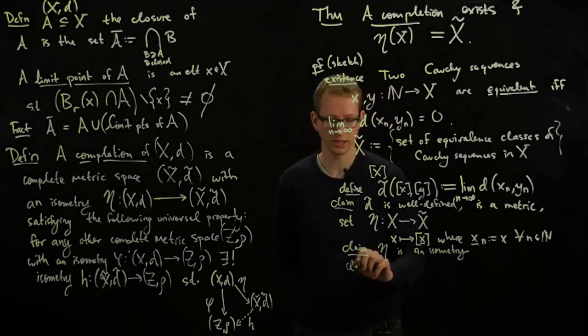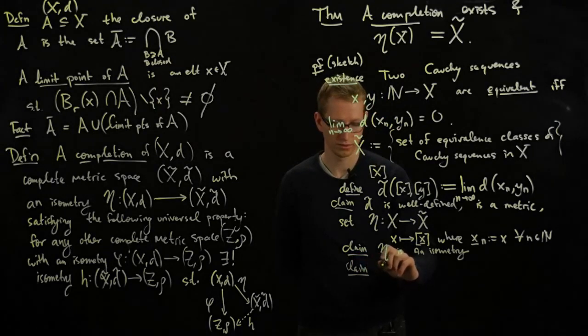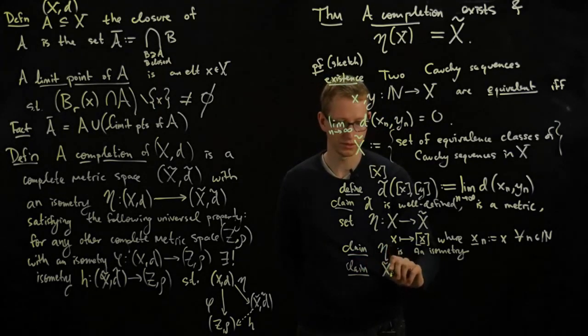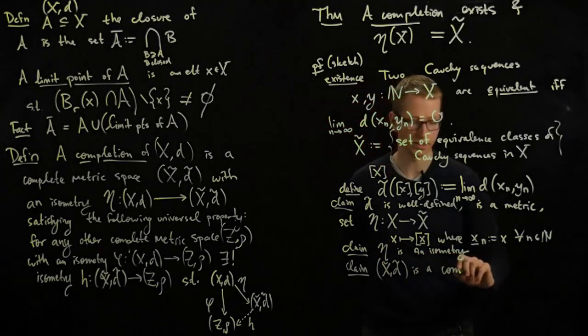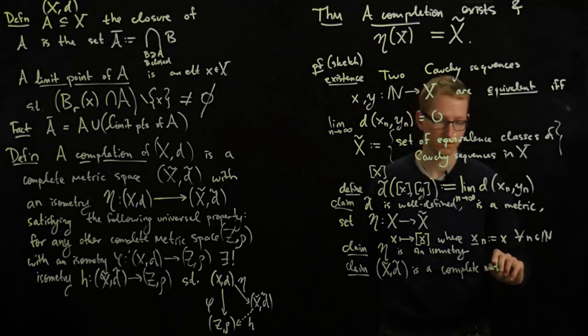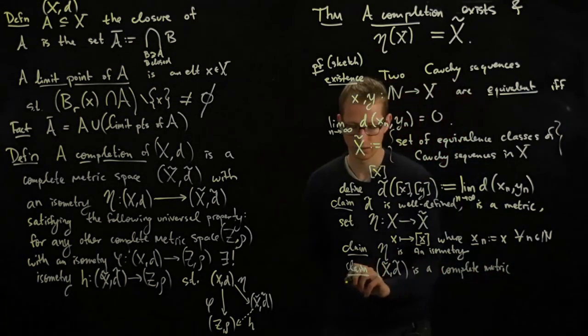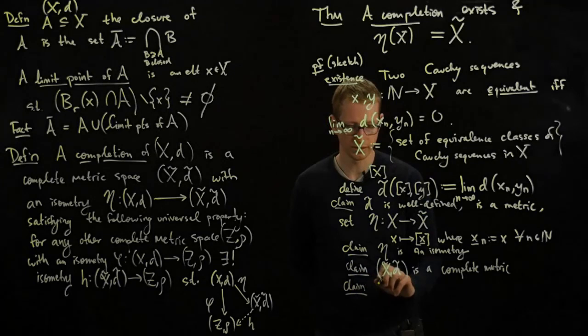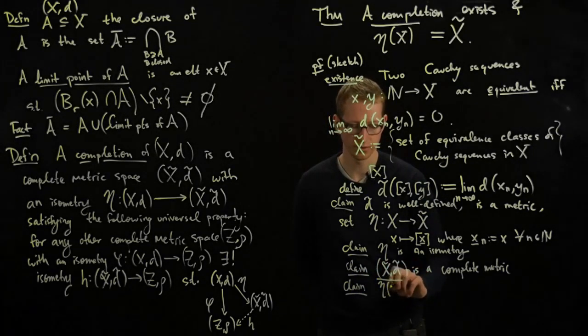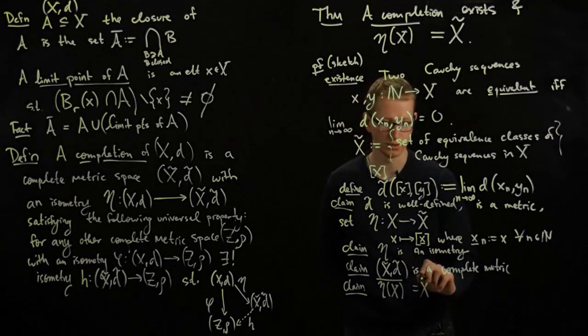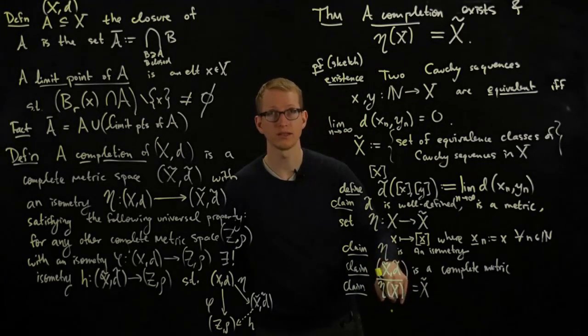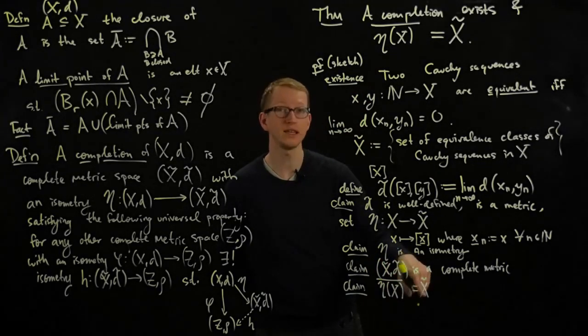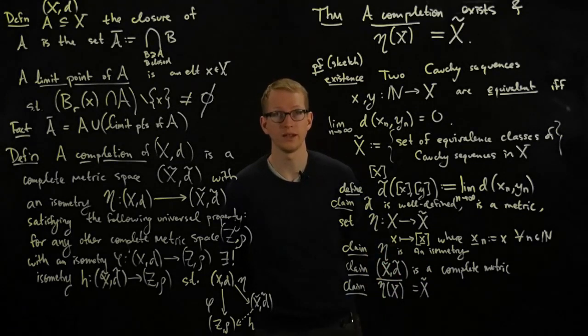Another claim is that x tilde, d tilde is a complete metric space. These are all things you have to check. Another claim is that the closure of eta x is equal to x tilde. And this you show by taking any element here and showing it's a limit point of eta x.